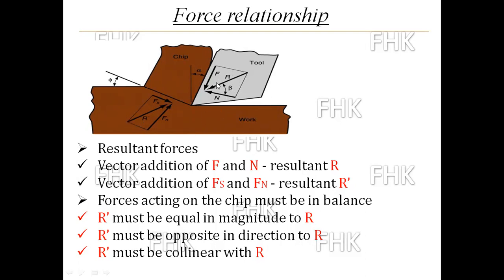For equilibrium, R' must be opposite in direction to R, and R' must be collinear with R. The conditions for balancing are: R and R' must be equal in magnitude, opposite in direction, and collinear.